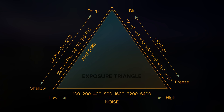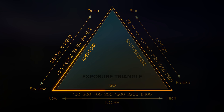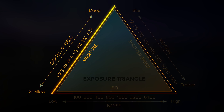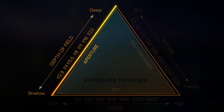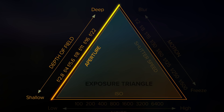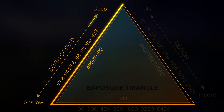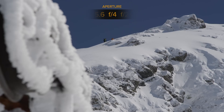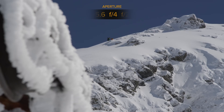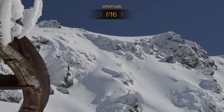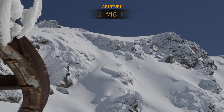Aperture, shutter speed, and ISO. Aperture refers to the amount of light being allowed through the iris of the lens. It is measured in f-stops and ranges incrementally between 1 and 22. The lower f-stops allow more light to hit the film sensor at a given time and equate to a shallower depth of field, while the higher f-stops allow less light to hit the sensor and equate to a greater depth of field.